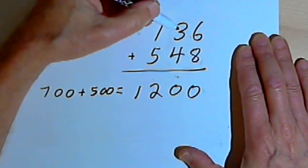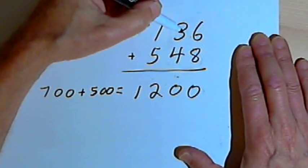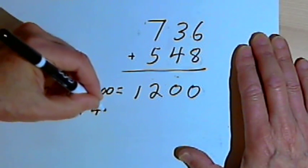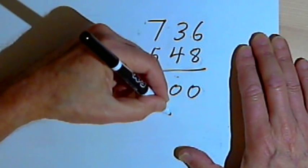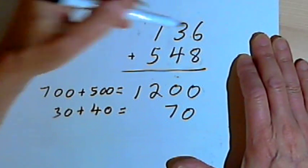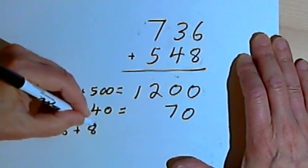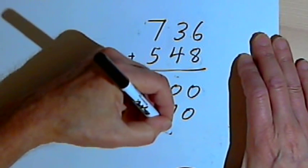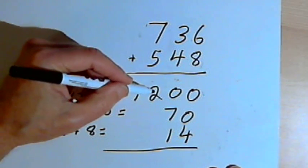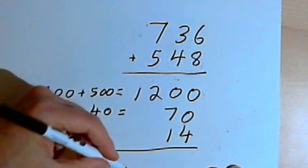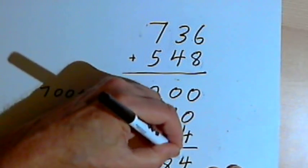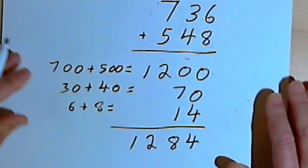Then I'm going to go to the tens column, and I've got a 30 and a 40. So I'll add together 30 plus 40. That's going to give me 70. And then I'll go to the ones column where I've got a 6 and an 8. So I'll add the 6 plus the 8. That's going to give me 14. I'll write that number in. And now I've just got to add up 1,200 plus 70 plus 14, and that's going to give me 1,284. The same answer I got before.